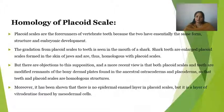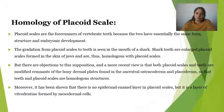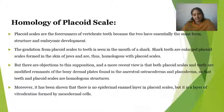However, there are objections to this supposition. A more recent view is that both Placoid scales and teeth are modified remnants of bony dermal plates found in the ancestral Osteoderm and Placoderm, so that teeth and Placoid scales are homologous structures. Moreover, it has been shown that there is no epidermal enamel layer in Placoid scales — the layer of vitrodentine is formed by mesodermal cells, showing some differences in the homologous relationship.